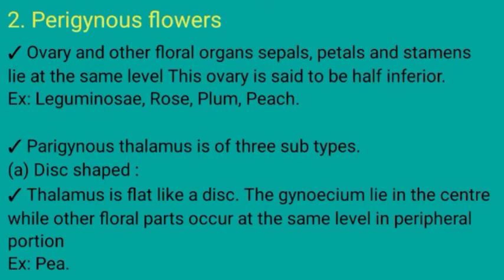The next type is perigynous flowers. Here, the ovary and other floral organs like Calyx, Corolla, and Androecium lie at the same level. The ovary is said to be half-inferior or half-superior. Examples: Leguminaceae family plants, Rose, Plum, and Peach. Perigynous thalamus is of three subtypes: disc-shaped, cup-shaped, and flask-shaped.